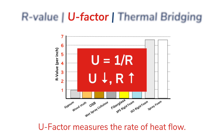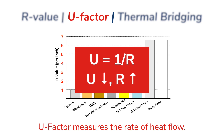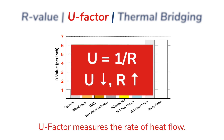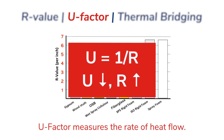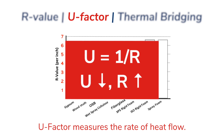U-factor, on the other hand, measures the rate of heat transfer and has historically been used as a metric to compare the thermal performance of window units. Assembly U-factors represent the overall thermal performance of a wall assembly better than looking at the R-values of individual components and adding them up. To summarize, the lower the U-factor of an assembly, the more energy efficient it is as a whole.